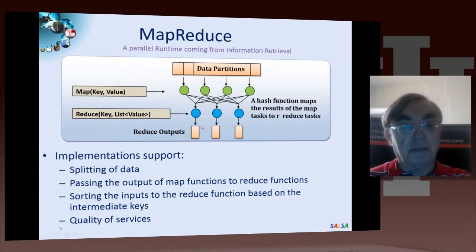Alright, MapReduce. MapReduce was invented by Geoffrey Dean and has been a really remarkable success. And it was originally developed for the commercial applications of clouds, particular information retrieval, but it's getting used in recommender systems and the other types of applications we've done.